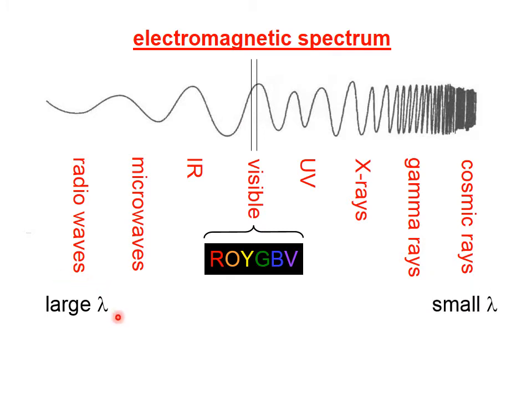On the left, we have very large wavelengths; on the right, we have very small wavelengths. On the left, the frequency is very, very low; on the right, the frequency is very, very high. As we talked about in an earlier lesson on waves, as the frequency increases, the wavelength decreases, and vice versa.